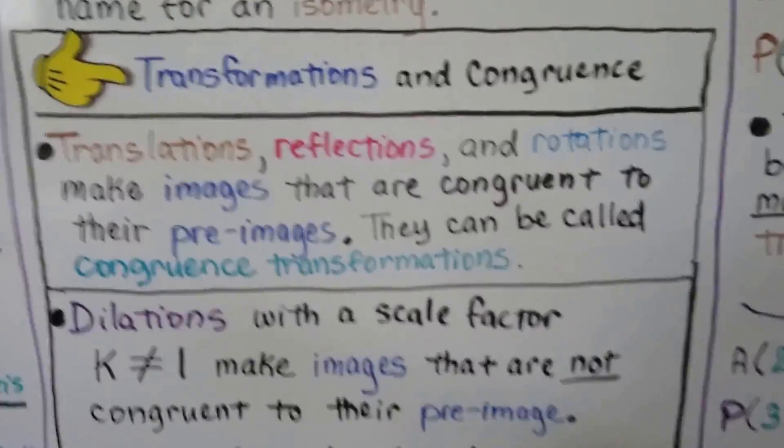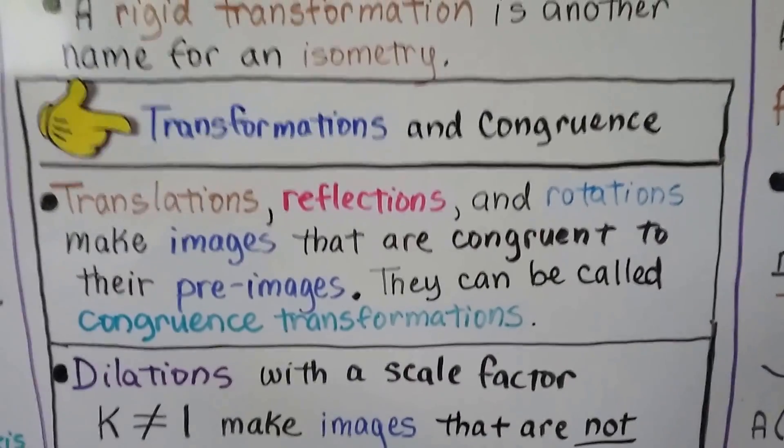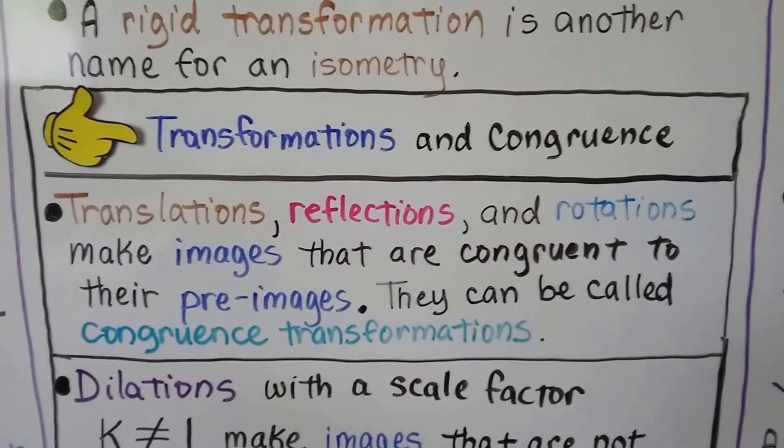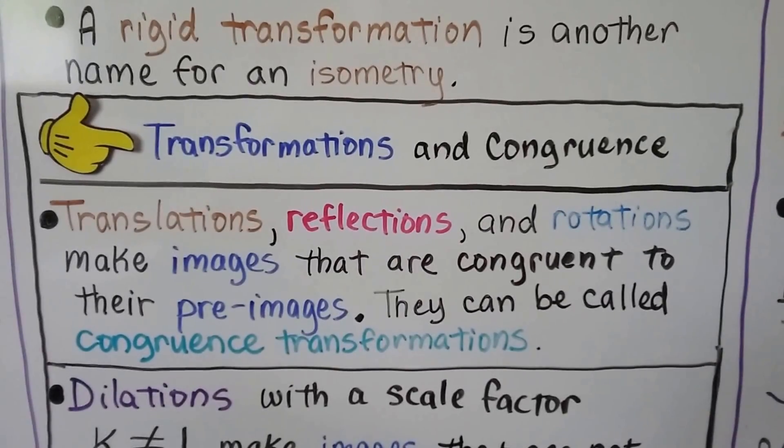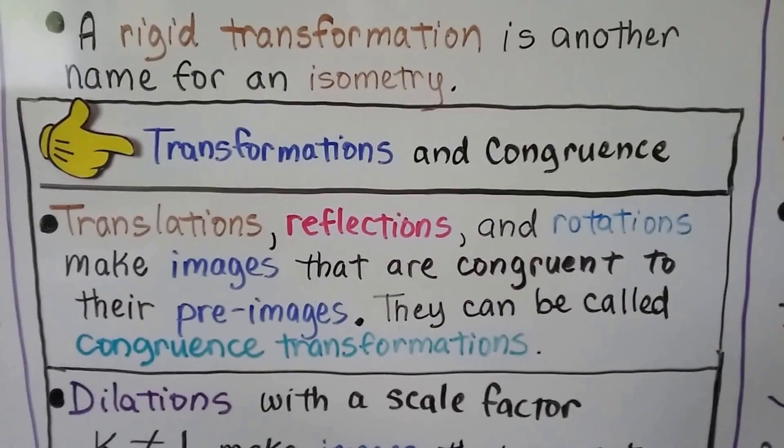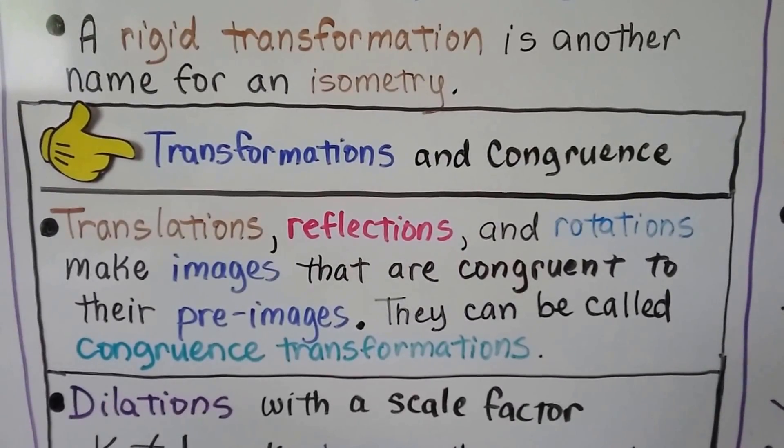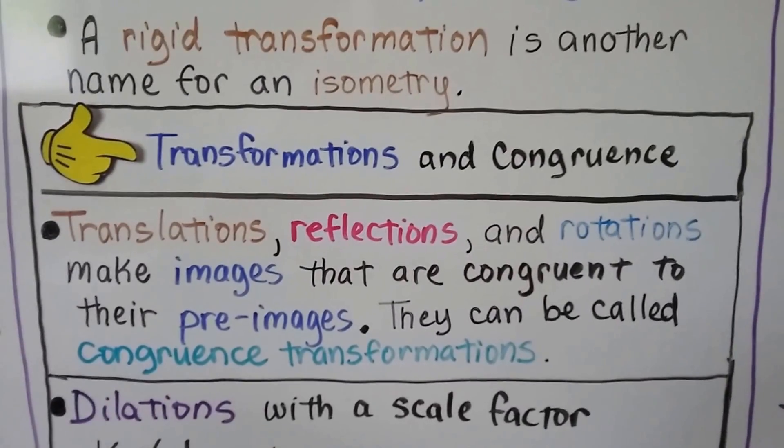So here we have transformations and congruence. Translations, reflections, and rotations make images that are congruent to their preimages, to their original. They can be called congruence transformations. That's translations, reflections, and rotations.